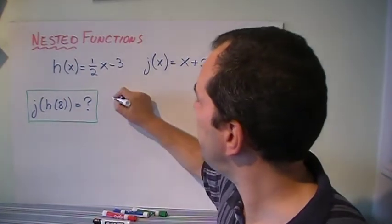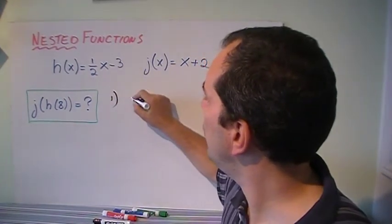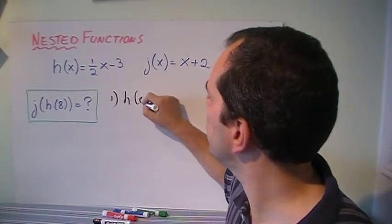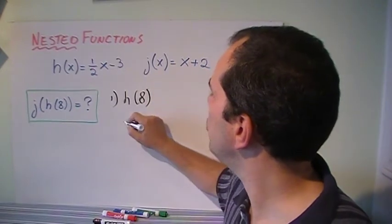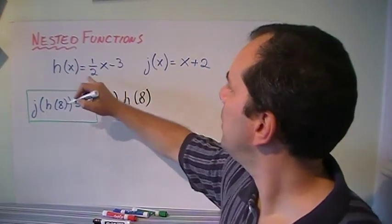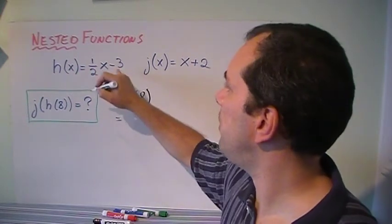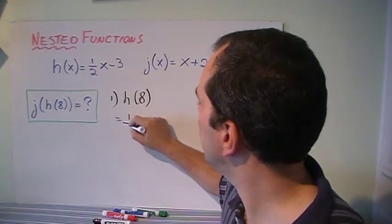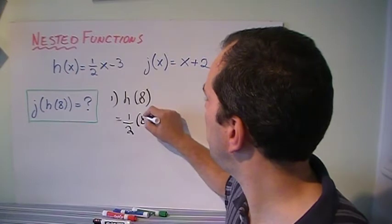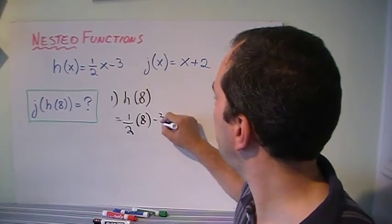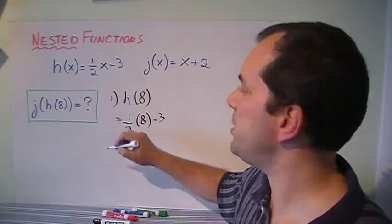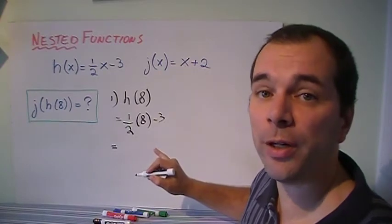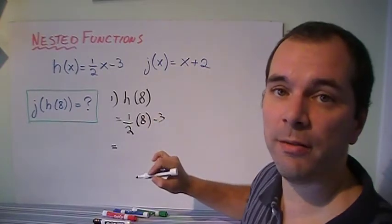So first, let's find out what is h(8). So h(8) is ½ times 8 minus 3. So ½ times 8 minus 3. Well what's half of 8? Half of 8 is 4. What's 4 minus 3? 4 minus 3 is 1.